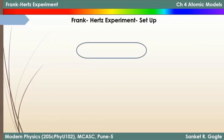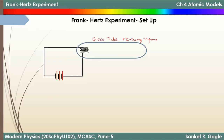Let's start with the experimental setup. The apparatus is a glass tube, very similar to a discharge tube, with electrodes placed inside. However, unlike a discharge tube with rarefied gas, this glass tube is filled with mercury vapor. Let's go through each arrangement step by step.